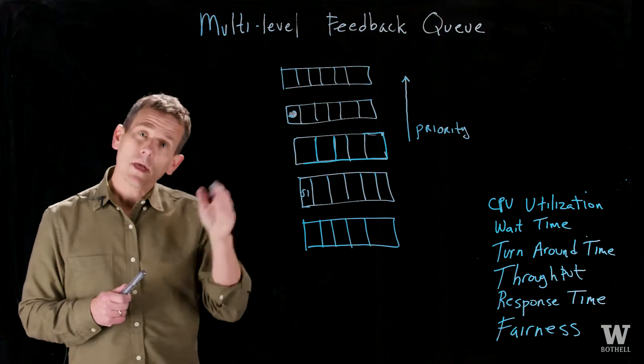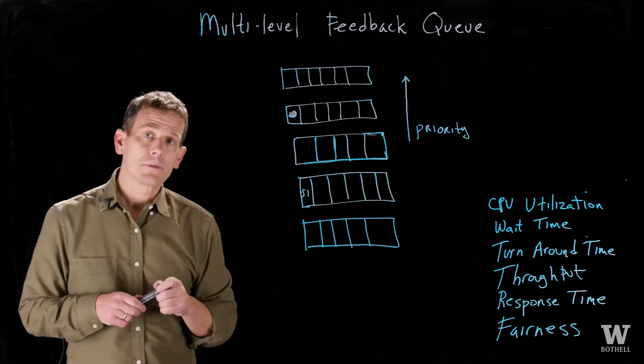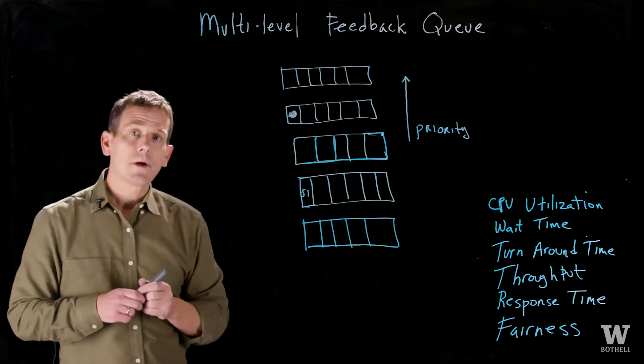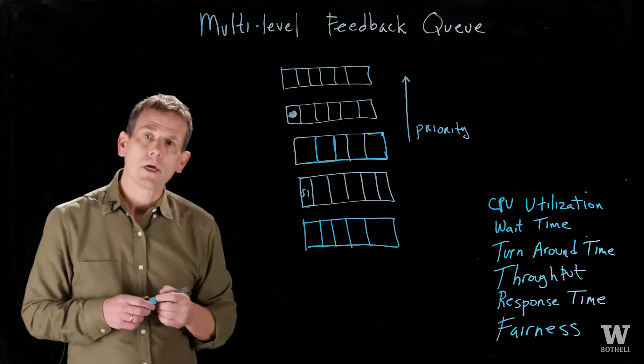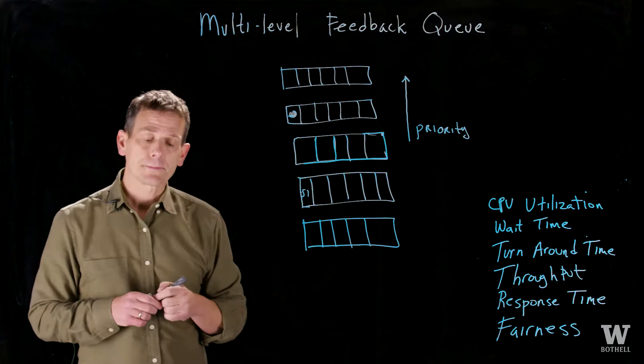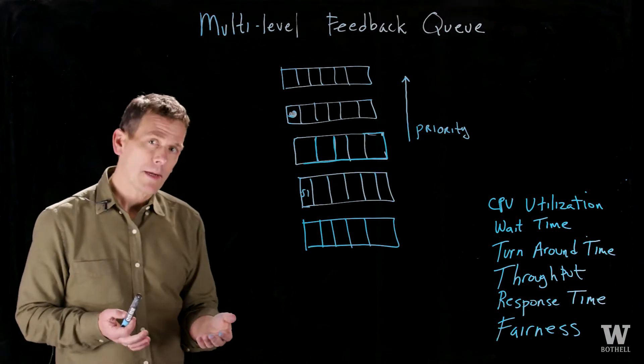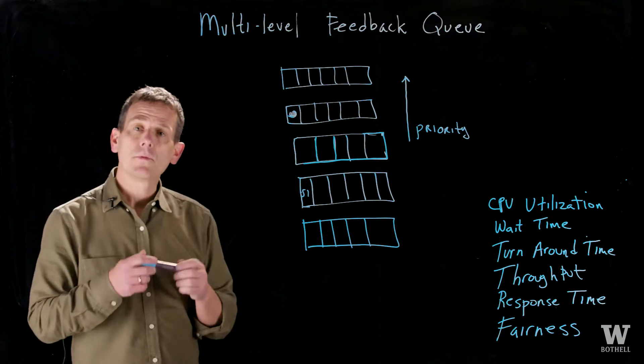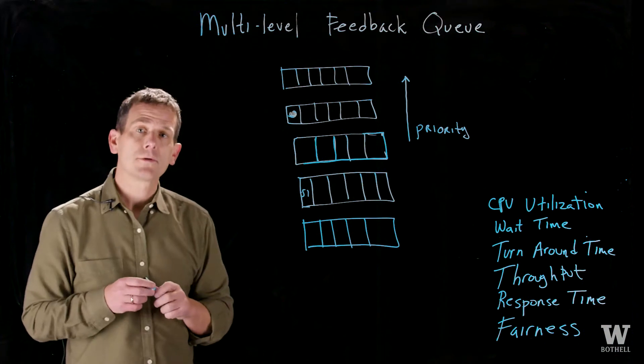The queues themselves may have different algorithms. Oftentimes, in the lower priority queues where you have longer running jobs, the quantums are longer so we can get a higher throughput. If a job is I/O bound, the priority may be boosted. This can approximate shortest job first.